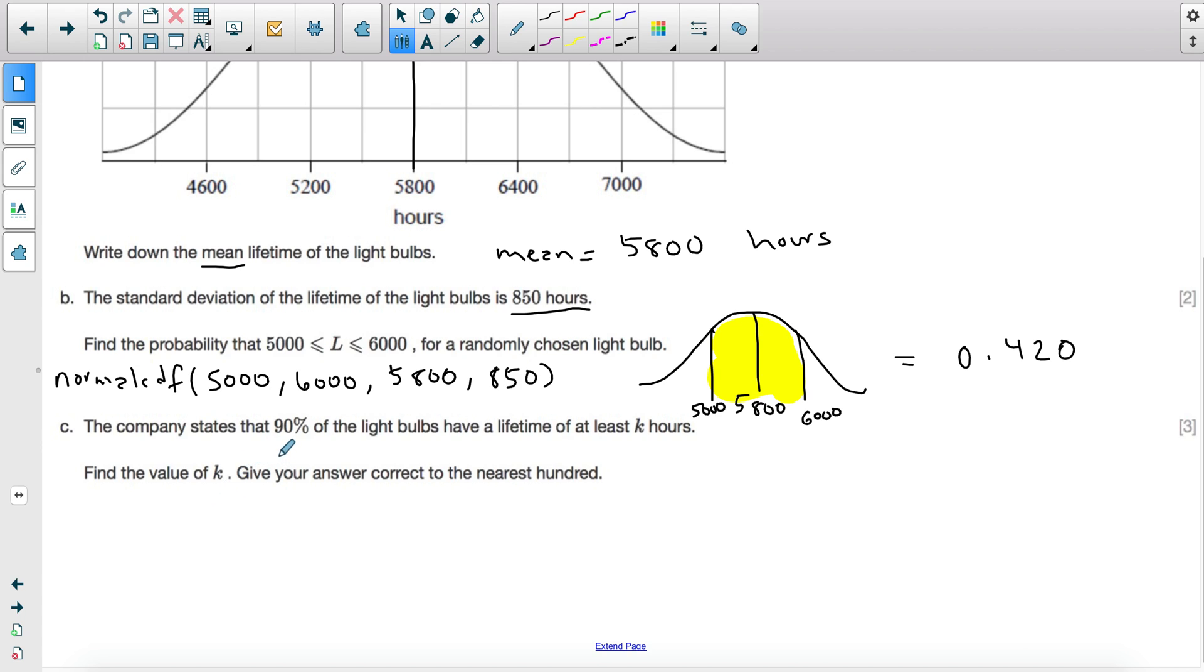For part C, the company states that 90% of the light bulbs have a lifetime of at least K hours. Find the value of K. Now, at least K is another way of saying the area greater than K is equal to 90%. Because if I have my normal distribution curve, this is 5,800. There's a specific K where the area above it is 90% because the bulbs need to have at least K hours and they could have more, but the least they could have is K. And so we're looking for an area to the right rather than to the left.